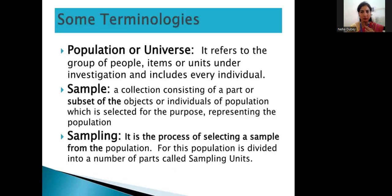We start from the basic terminology. Population, or universe, refers to the group of people, items, or units under investigation and includes every individual. Sample is a collection consisting of a part or subset of objects or individuals of a population, selected for the purpose of representing the population. Sampling is a process of selecting the sample from the population, and for this, the population is divided into a number of small parts called sample units.